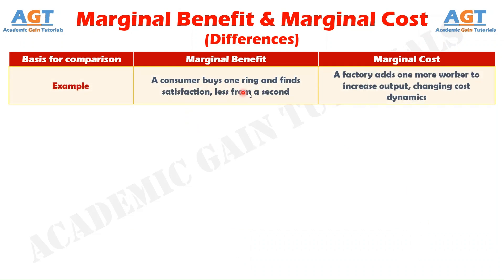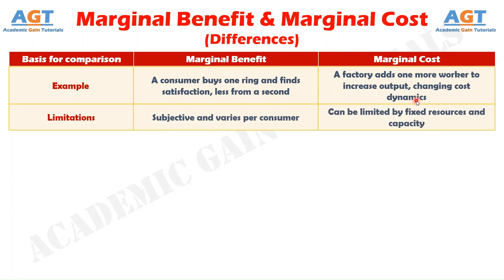Number nine: a practical example of marginal benefit is when a person buys a ring and experiences reduced satisfaction with a second, whereas marginal cost is illustrated when a factory adds a worker, altering the cost of production. And difference number ten: marginal benefit is subjective and varies with individual preferences, whereas marginal cost is objective and dependent on production constraints and resources.